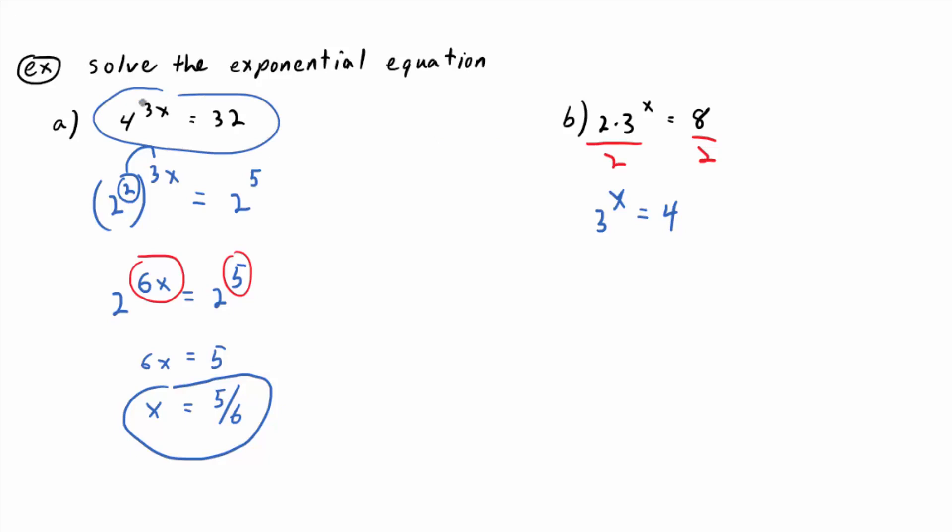And now it doesn't look all that much different, except there's no nice way to write 3 as a power of 4, and there's no nice way to write 4 as a power of 3. So that method from part A fails.